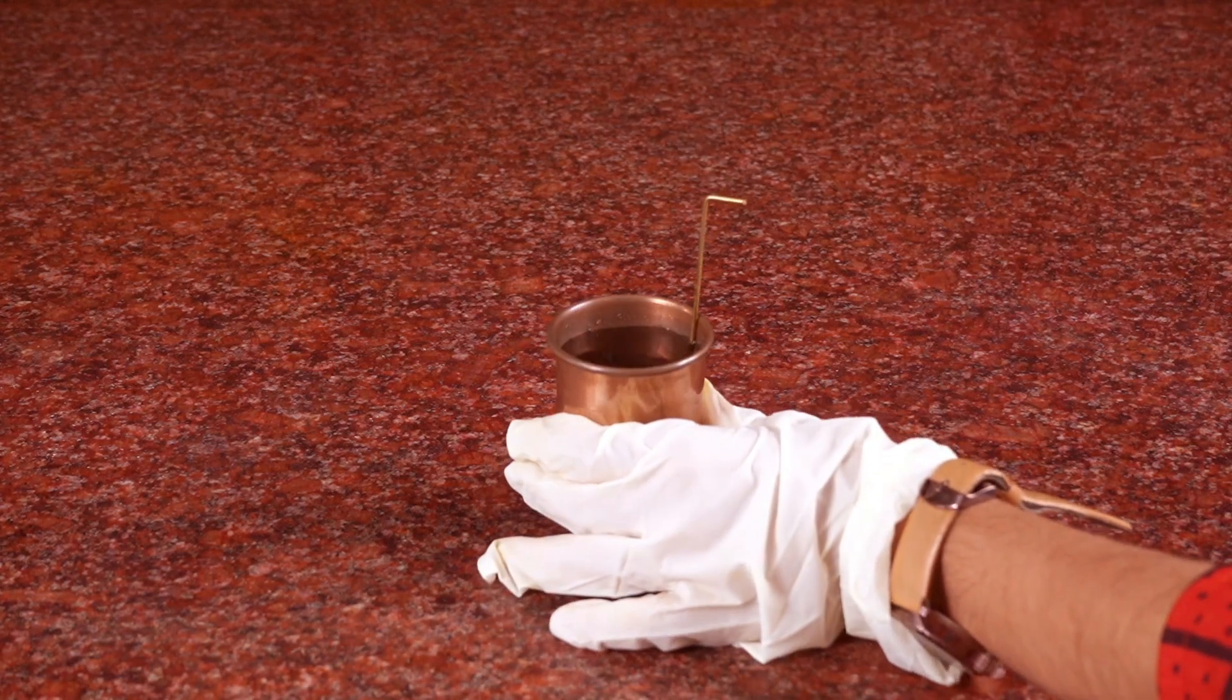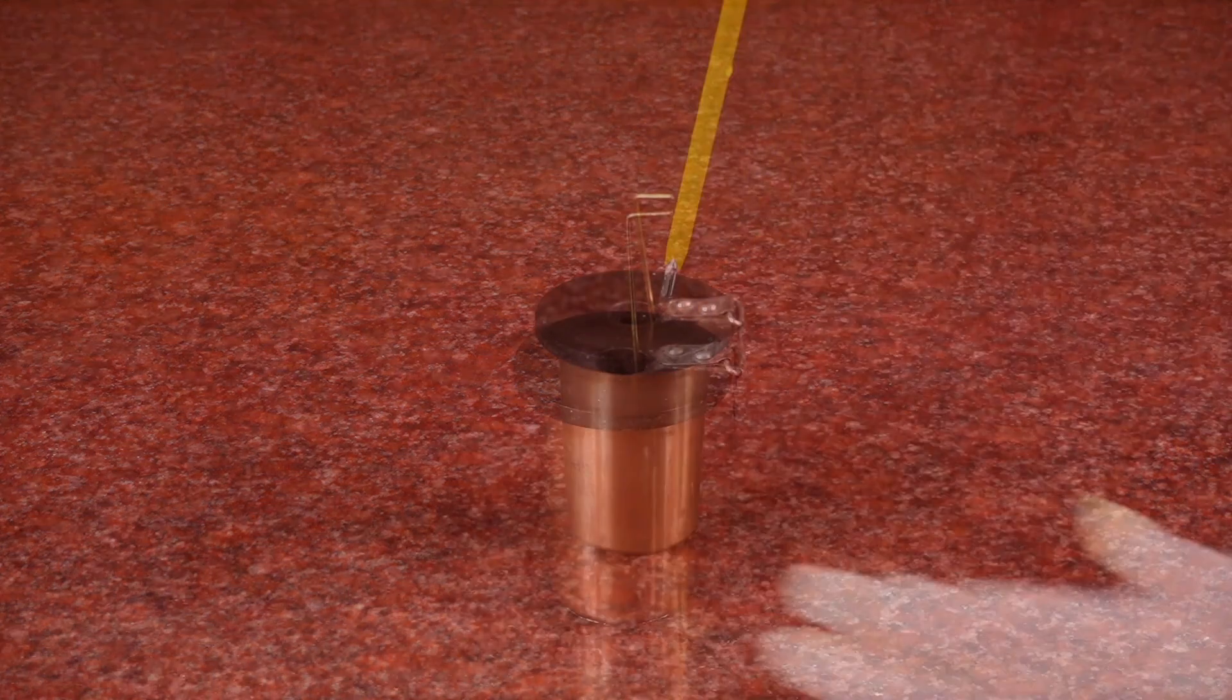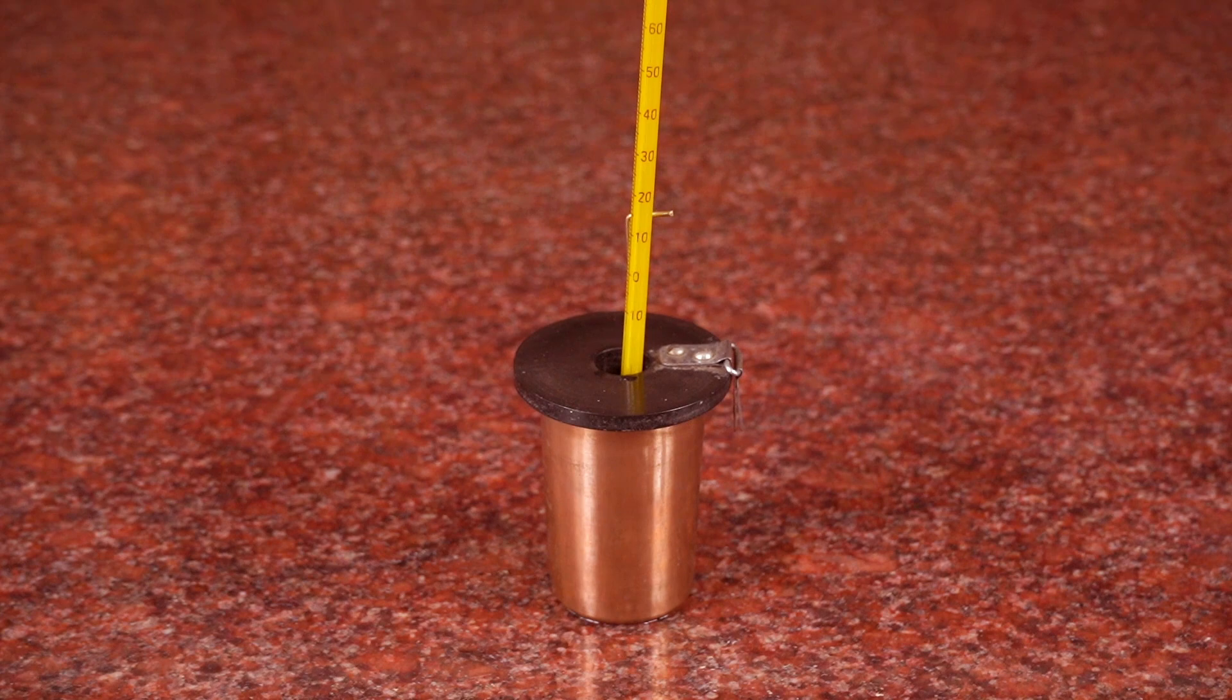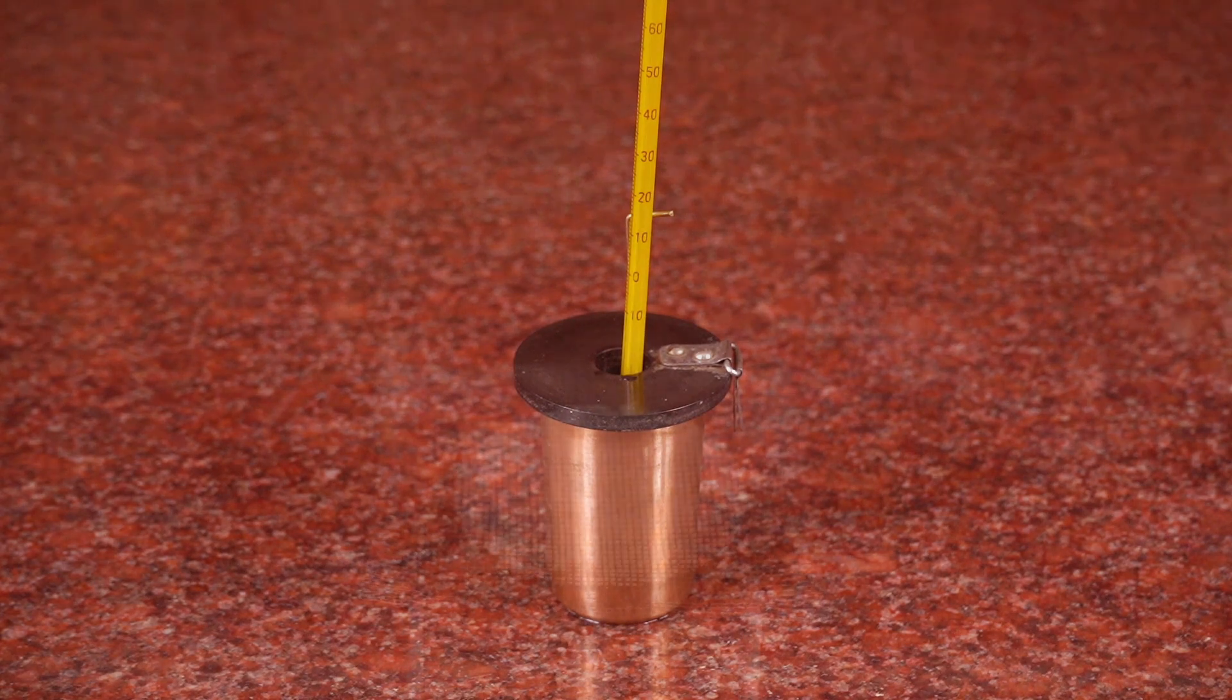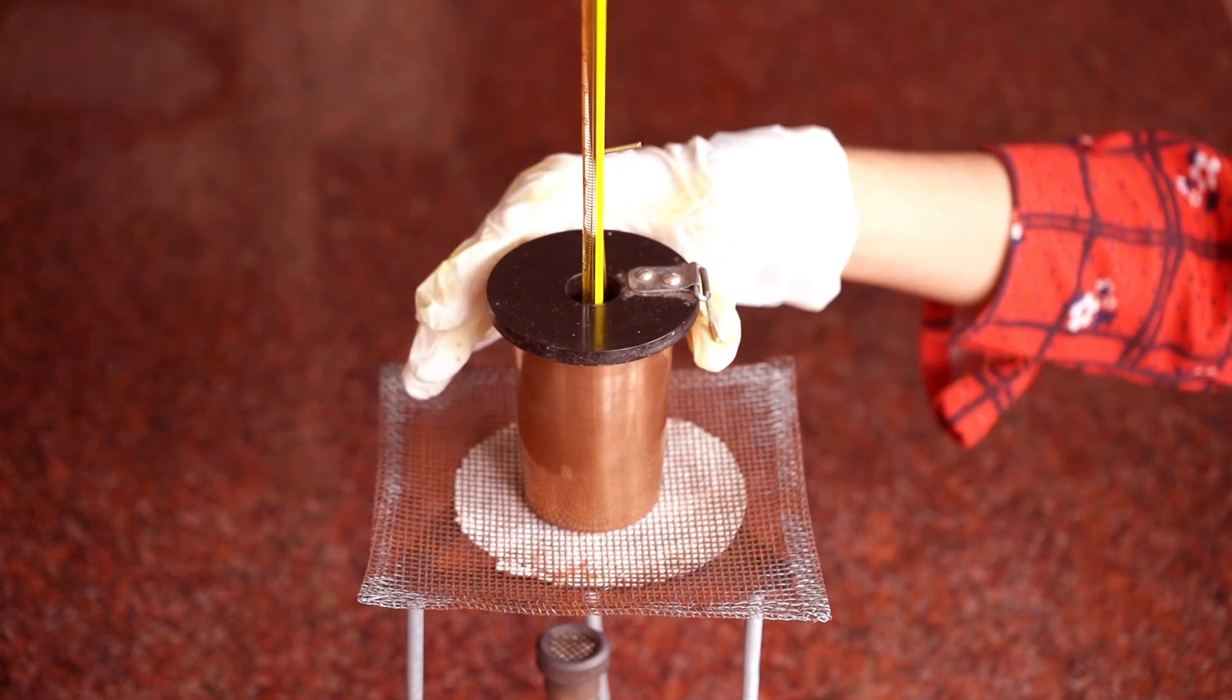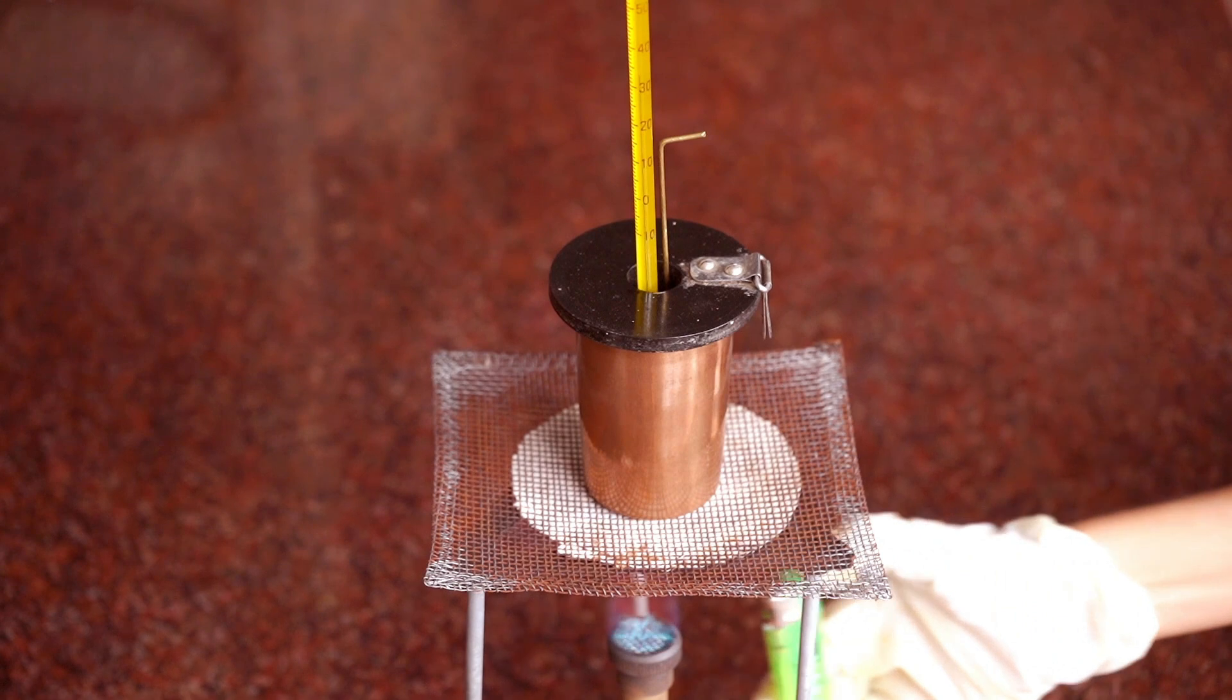Cover calorimeter with two hole lid. Fix thermometer through one hole. Place the calorimeter over the wire gauze on tripod stand. Heat calorimeter with burner gas.